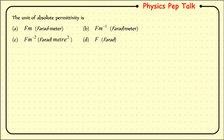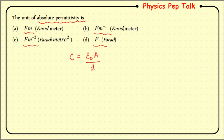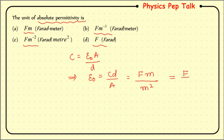Next question: the unit of absolute permittivity. We know farad is a unit of capacitance. Using the expression for a parallel plate capacitor: C = ε₀A/d. Rearranging, ε₀ = C·d/A. Capacitance is in farad, distance is in meter, and area is in meter square. This gives farad times meter divided by meter square, which simplifies to farad per meter. Therefore option B, farad per meter, is the correct answer.